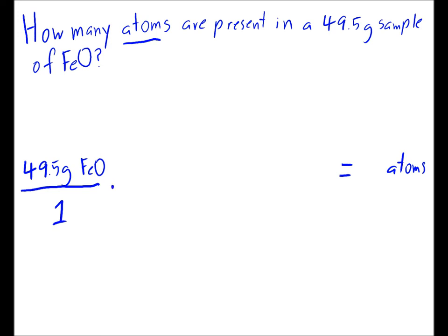Alright. We don't want grams in our answer. We need something that will allow us to cancel out grams. Just a good rule of thumb: with these problems, we're probably going to deal with moles at some point. So let's start by figuring out what's the mass of a mole of iron oxide, FeO. Quick check of the periodic table should give us that.